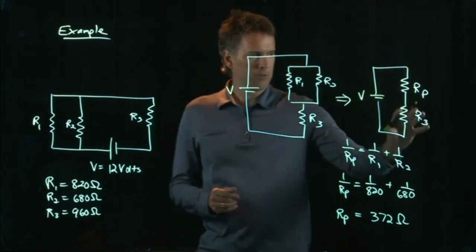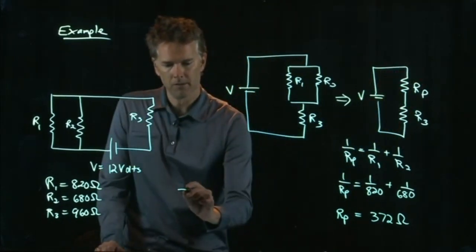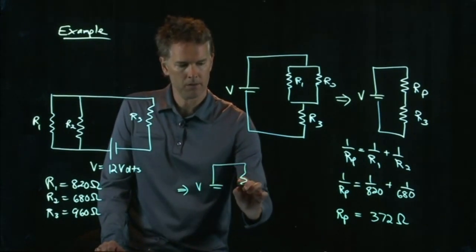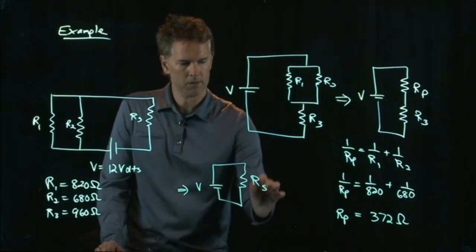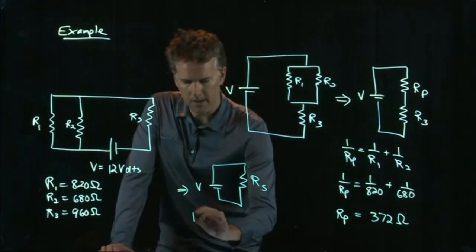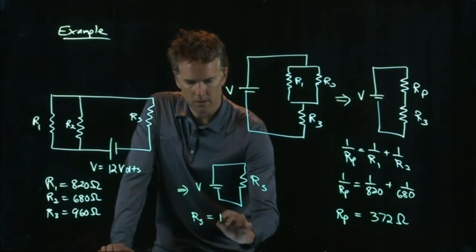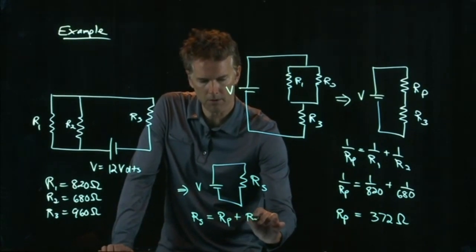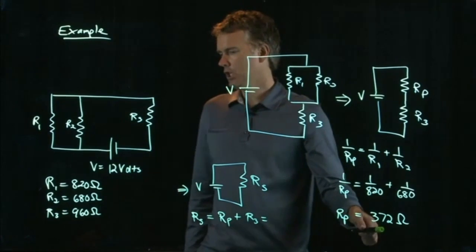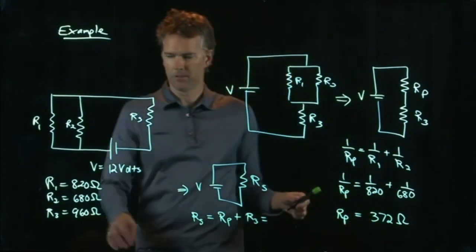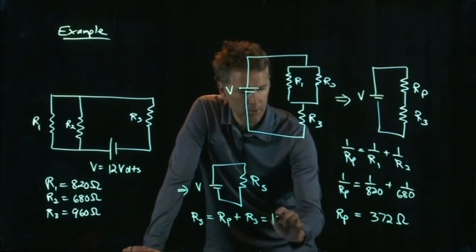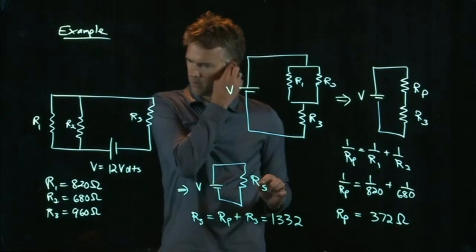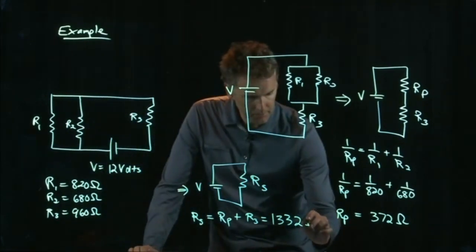Now, we need to add those two in series. So, we end up with this, where Rs is now Rp plus R3. So, it's 372 plus 960, which is 1332. And that is, of course, ohms.